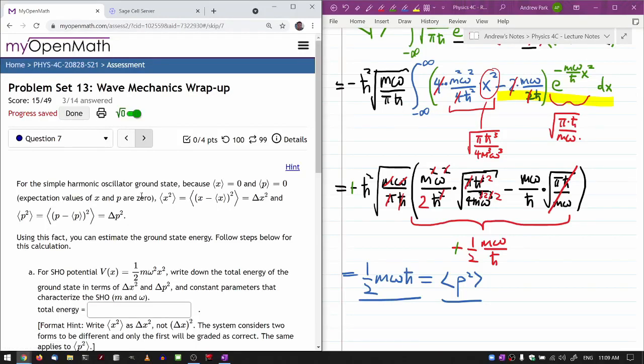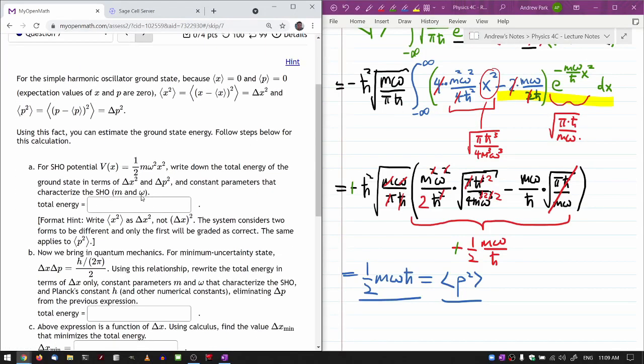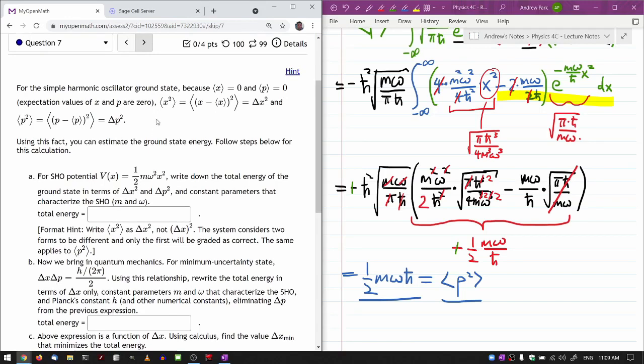Question 7. For the simple harmonic oscillator ground state, using this fact you can estimate the ground state energy. Follow the steps below for this calculation.